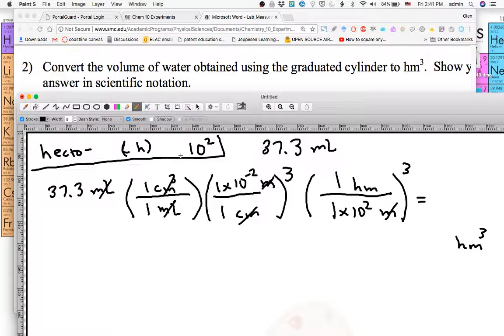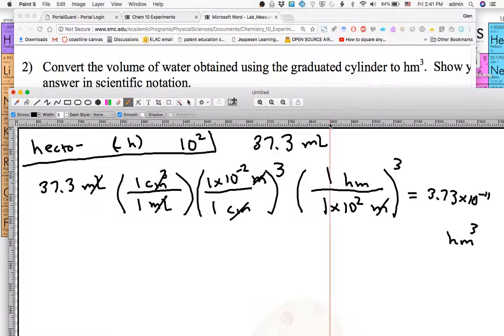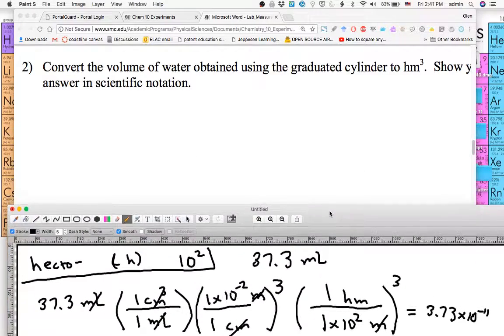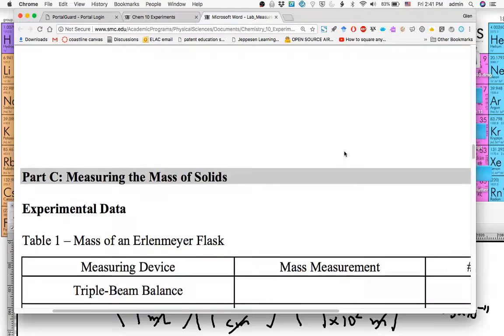So this is going to be 3.73 times 10 to the negative 11 cubic hectometers. That is how you do this. Please do yours like that. And that's it. Thank you. Bye.